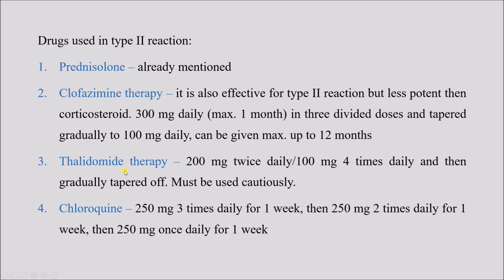Thalidomide therapy must be given very cautiously — it cannot be given in pregnancy due to its teratogenic effect and risk of congenital malformation. The starting dose is 200 mg twice daily (400 mg daily in two divided doses) or 100 mg four times daily, then gradually tapered off. Chloroquine can also be given starting with 250 mg three times daily for one week, then 250 mg twice daily for the next week, then 250 mg once daily, gradually reducing the dose.